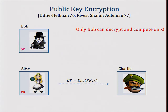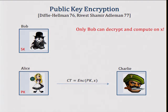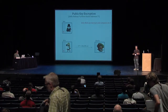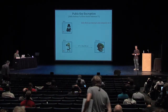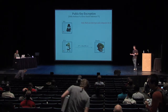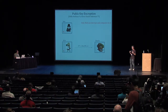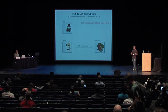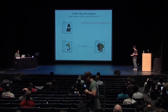In the classical public key encryption setting, if we have Bob who generates a particular secret key and gives a public key to Alice, then whatever messages Alice encrypts using the public key, only Bob is going to be able to decrypt and compute on. So you can view the classical public key encryption system as providing us with all-or-nothing access control to the data — only users who have the secret key can actually compute on the data.